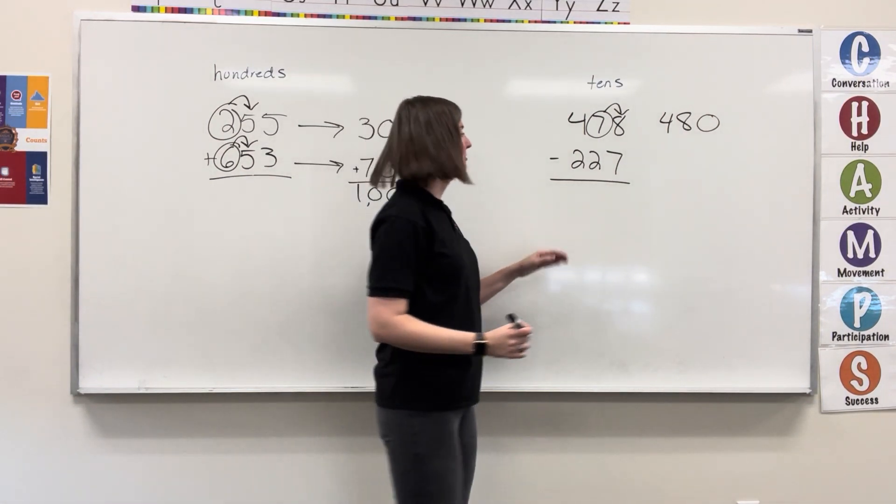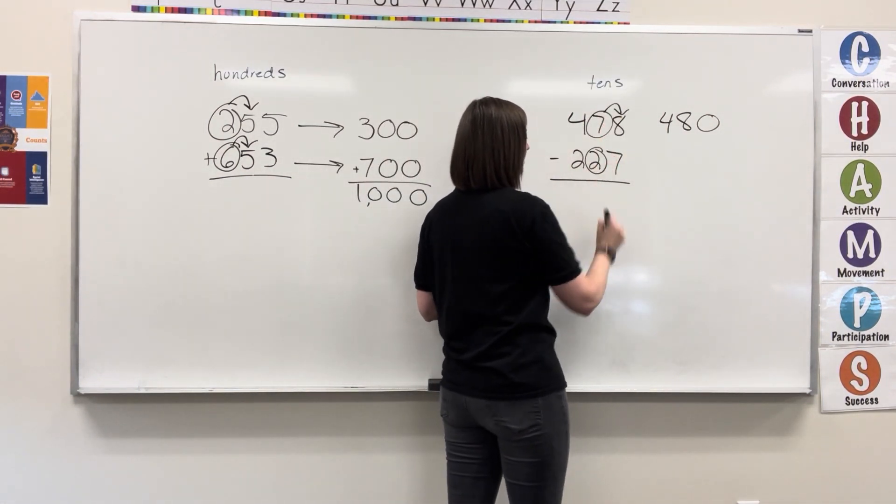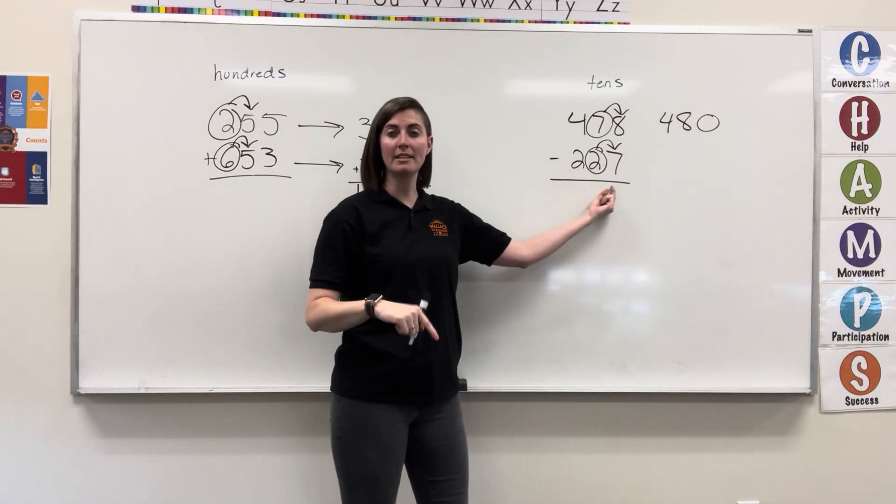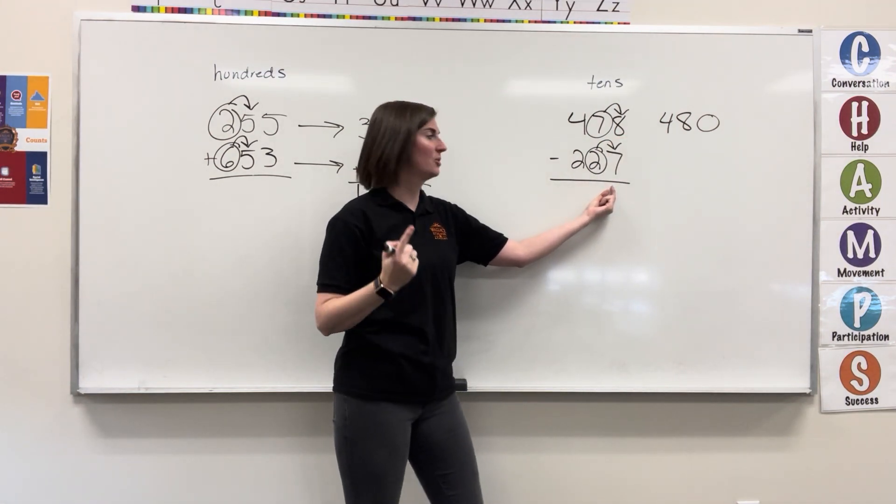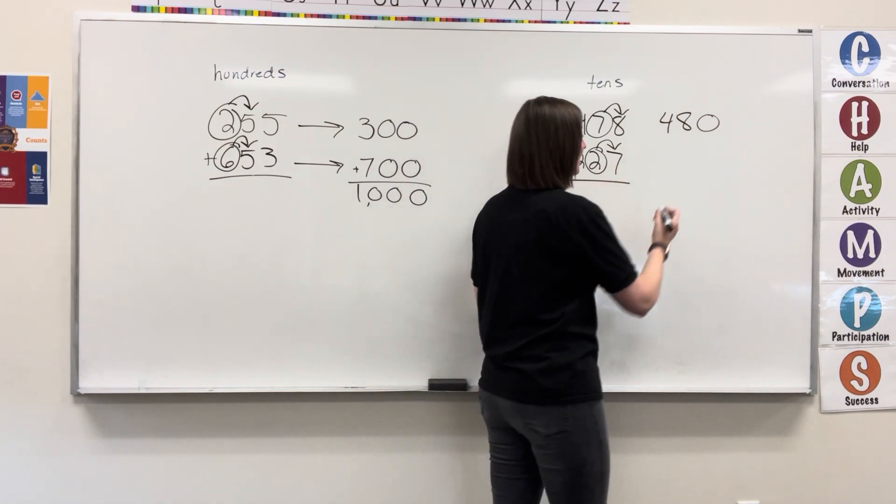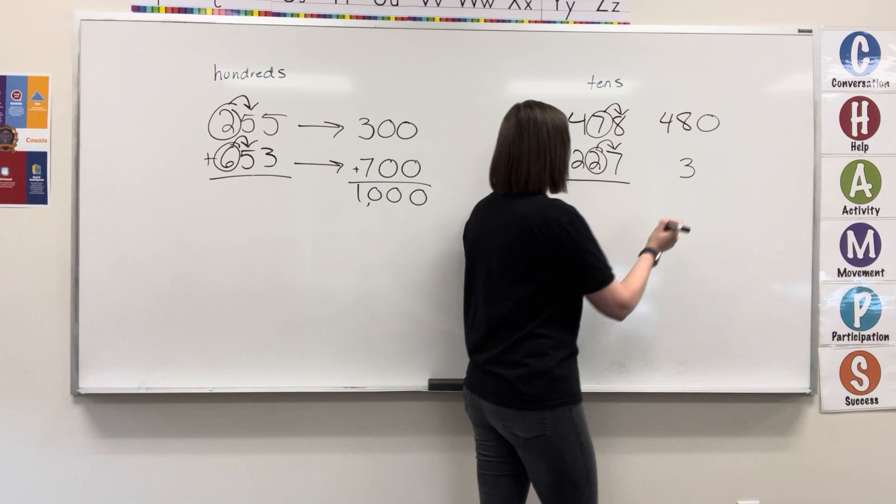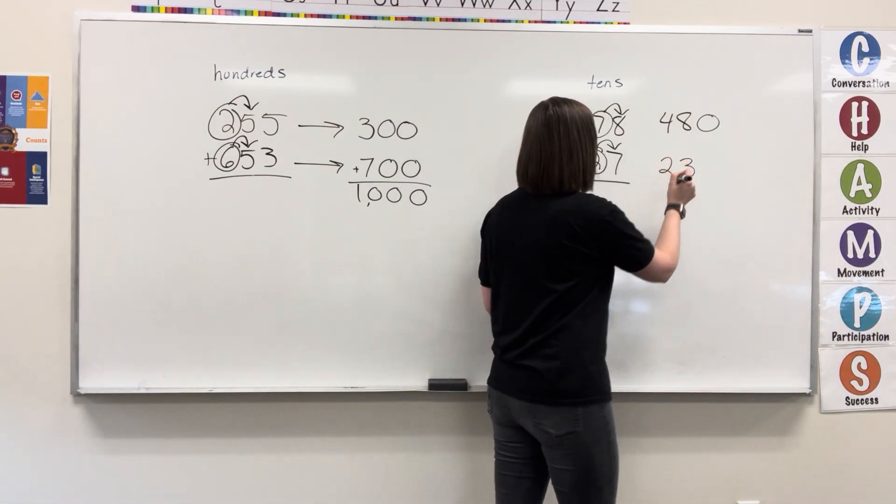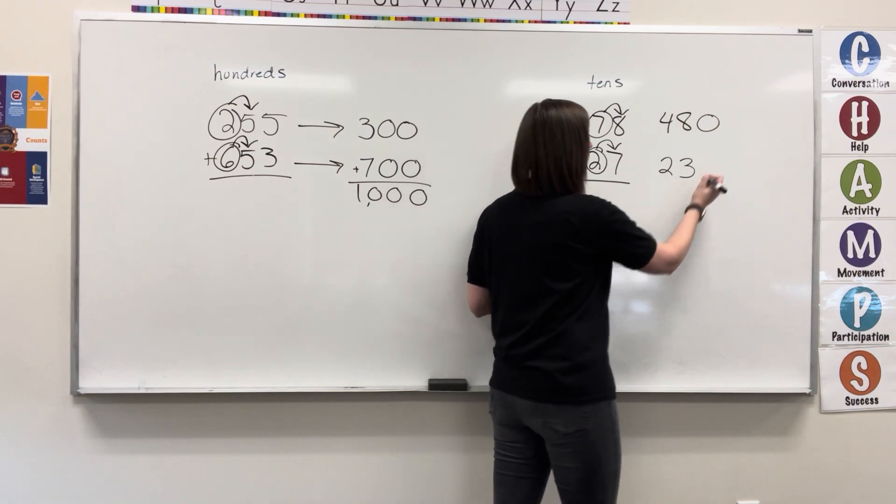Our next number needs to be rounded to the tens. Look to the right. Four or less, let it rest. Five or more, let it soar. Seven is five or more. Two is going to soar. Two turns into a three. Everything to the left stays the same. Everything to the right becomes zeros.